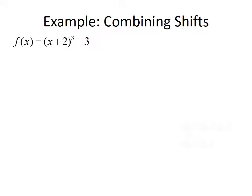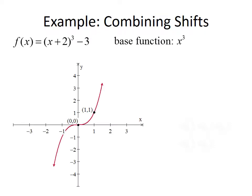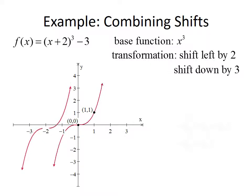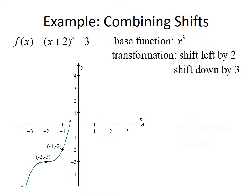Now that we've talked about vertical shifts and horizontal shifts, let's do an example that combines both. Consider f(x) = (x + 2)³ - 3. Since the function has a cube in it, we start with the base function x³. Since we add 2 within the cube function, that gives us a horizontal shift to the left by 2. Since we subtract 3 outside of x³, that shifts the graph down by 3. The overall graph of f(x) = (x + 2)³ - 3 looks like this.